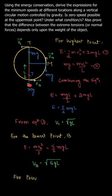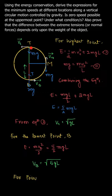For the lowest point, if we write the energy equation, there is only kinetic energy since the potential energy at the lowest point is zero. So the kinetic energy at the lowest point is half m vb squared, which equals the total energy by conservation. Equating with the total energy 5/2 mgl, we get the velocity at the bottom as vb equals root over 5gl.